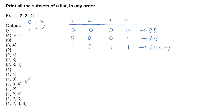This is where we use recursion. We define a function — let's just call it 'function' for now — that takes a list as input, a list of toggles, and a counting variable i. The toggles list corresponds element-by-element to the list: if an element in toggles is 1 the corresponding element in list is used; if it's 0 it's not used. We choose to use zero or one as long as i is not greater than or equal to the length of the list.